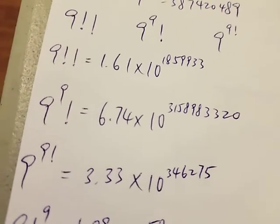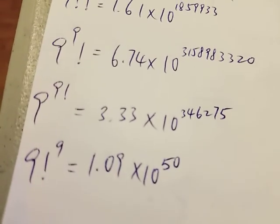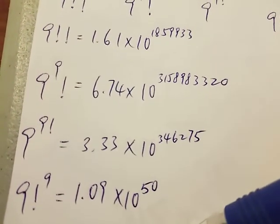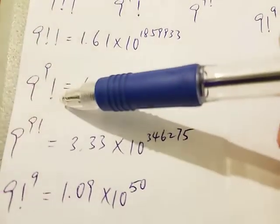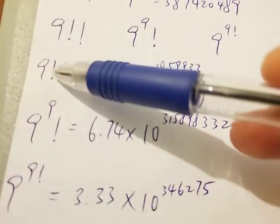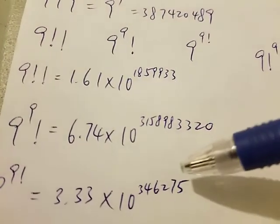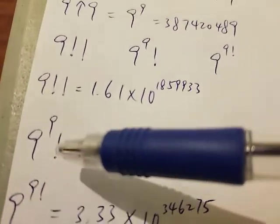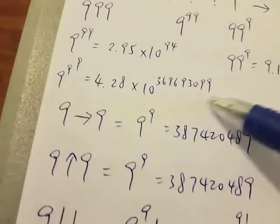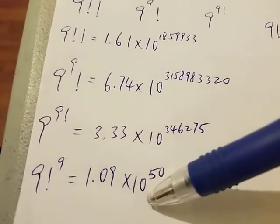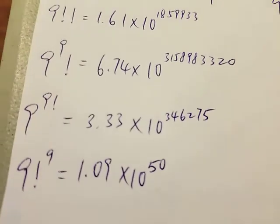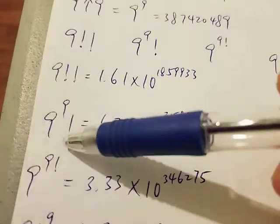Now we have three candidates to consider: 9 to the power of 9 factorial, 9 to the power of 9 factorial arranged differently, and 9 factorial to the power of 9. As you can see, these give three different results, and the largest is 9 to the power of 9 factorial. Since 9 to the power of 9 is bigger than 9 factorial, that means 9 to the power of (9 to the 9) is bigger than 9 to the power of 9 factorial. And 9 factorial to the power of 9 gives the smallest result — big base with a small power gives a small number.